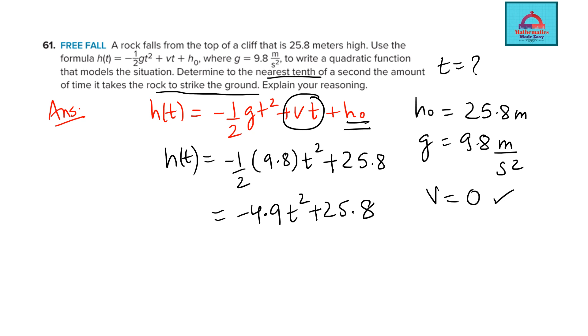Now when the rock is striking the ground, can I say the height will become 0 because it is touching the ground. So now simplify this, move it on the other side, it becomes positive. Divide both sides with 4.9.